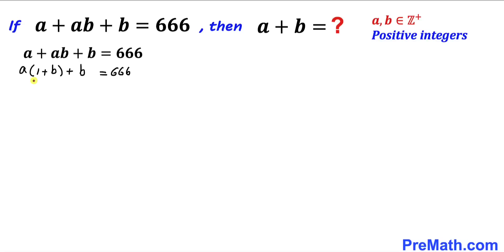Now we can see we have 1 plus b here, so I am going to add 1 on both sides as well. Let me tweak this 1 plus b—this could be written as b plus 1 as well.